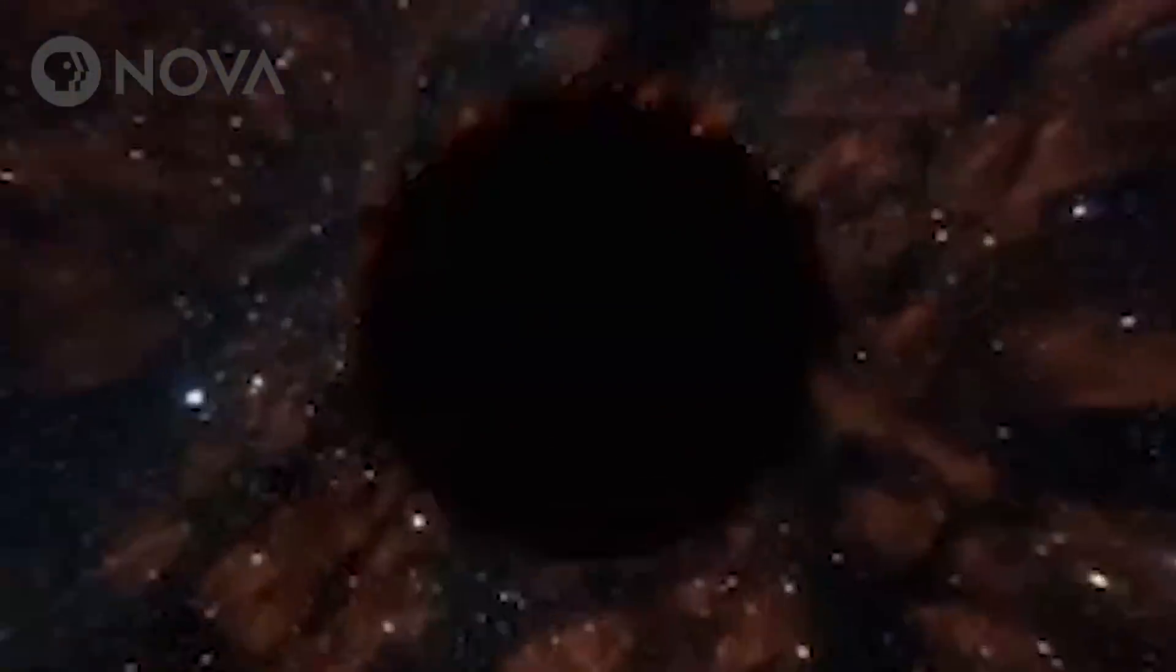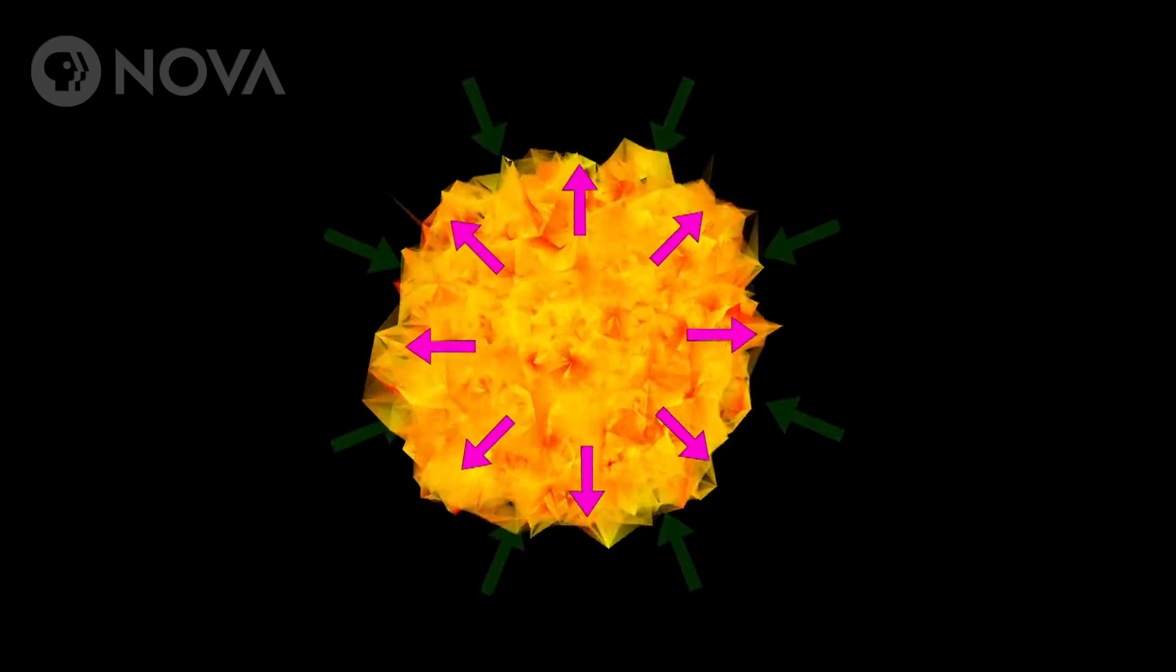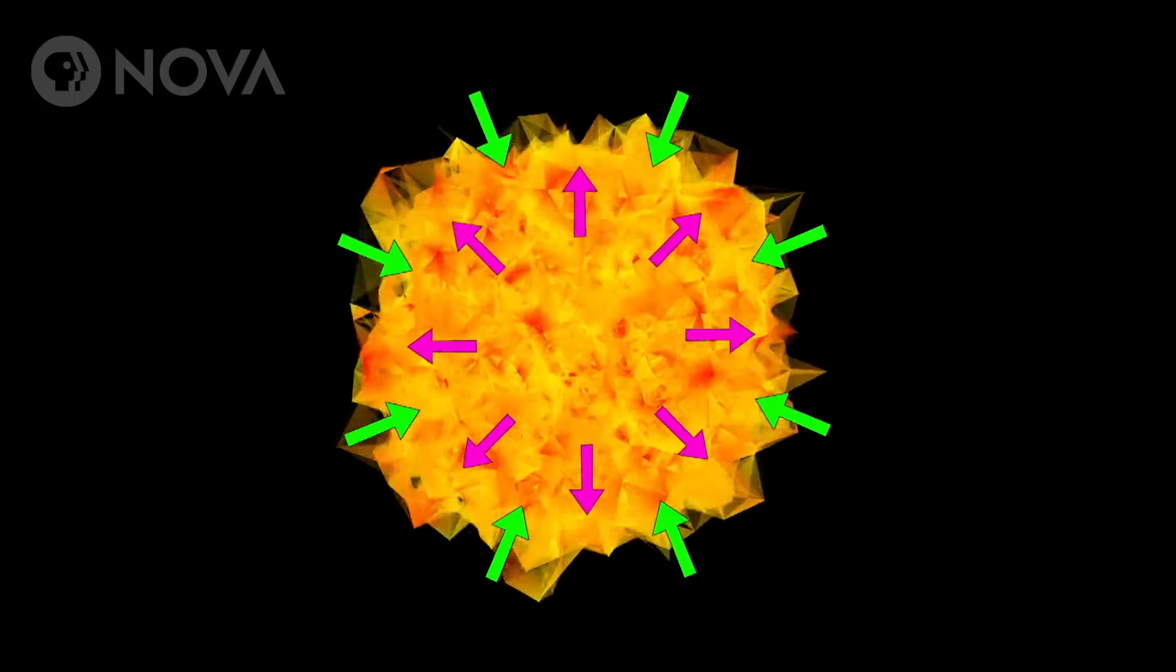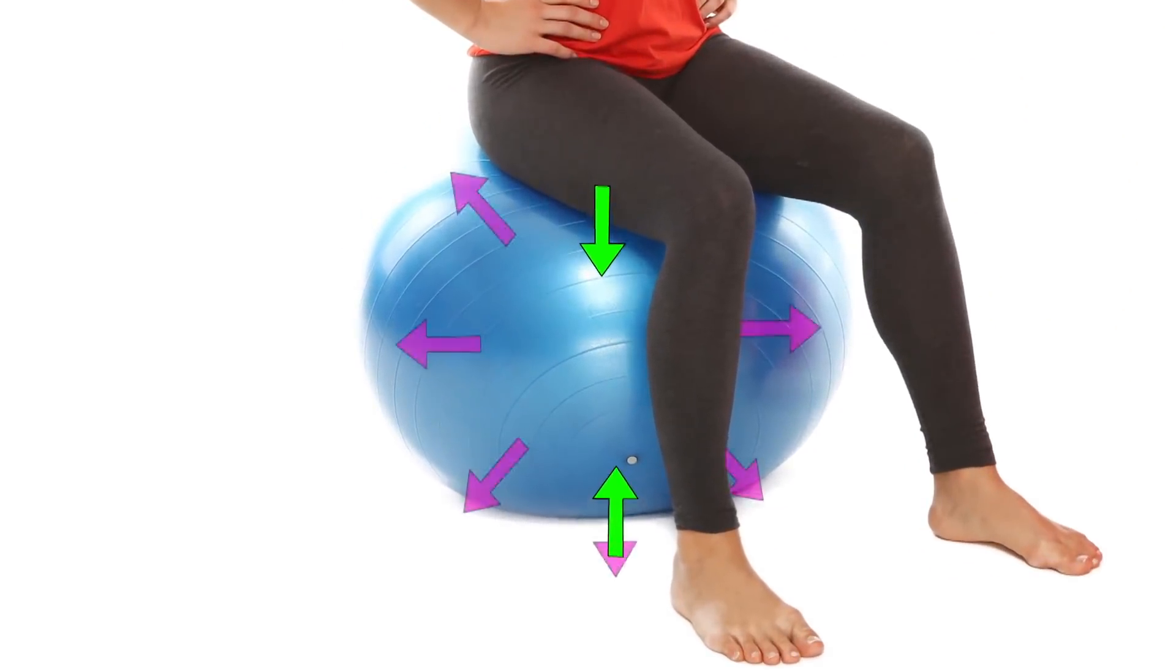But according to loop quantum gravity, there's a force preventing the matter from being completely crushed to a point. It can only be crushed until this outward pressure-like force counters the crushing force of gravity. It's kind of like when you sit on an exercise ball. It squishes down, but only so much because of the air pressure inside the ball.